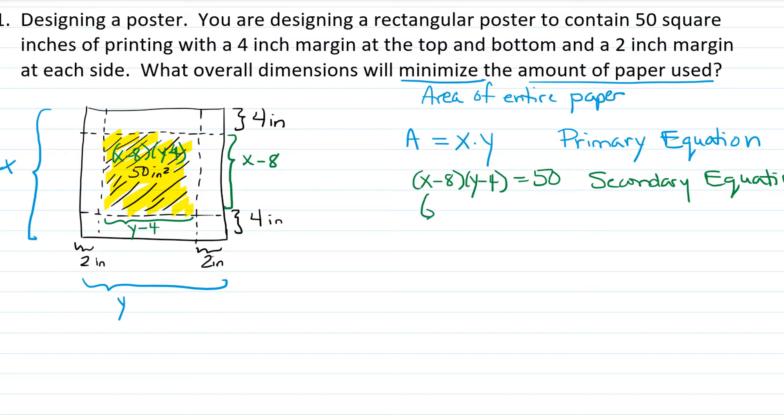Let's suppose that we solve for Y in this equation. I'm going to start by dividing both sides by X minus 8. So we have Y minus 4 equals 50 over X minus 8. Then I just need to add 4 to both sides. We have 50 over X minus 8 plus 4 is equal to Y.